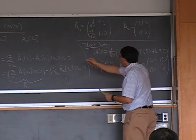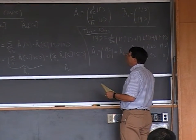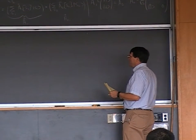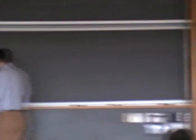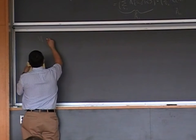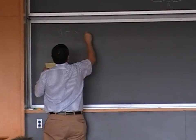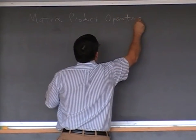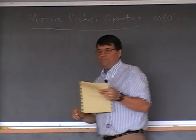We can play the same game with operators and get something called matrix product operators, or MPOs, which we frequently use to represent Hamiltonians. This is something we didn't fully understand in DMRG until well after DMRG was invented, but once you write things in the MPS language it looks easy.